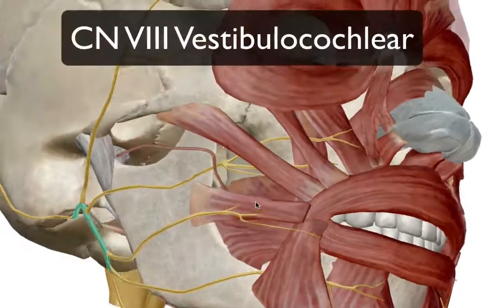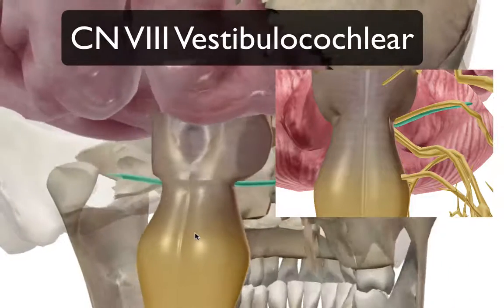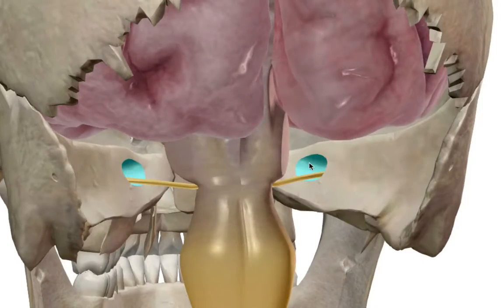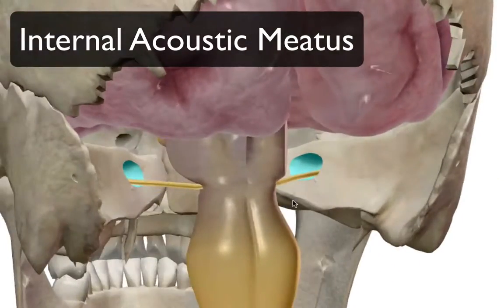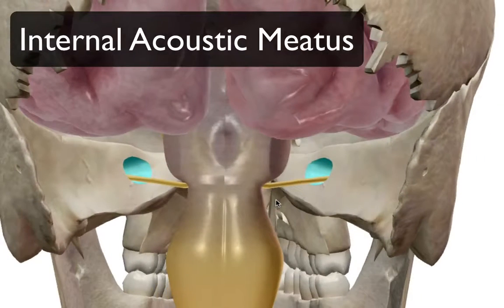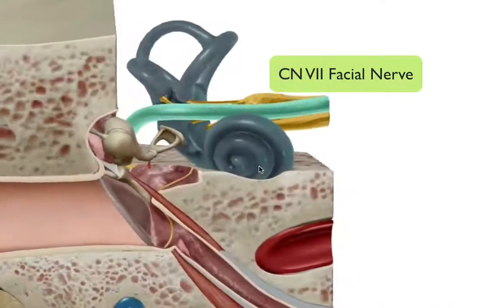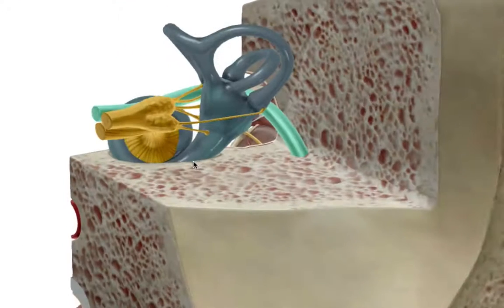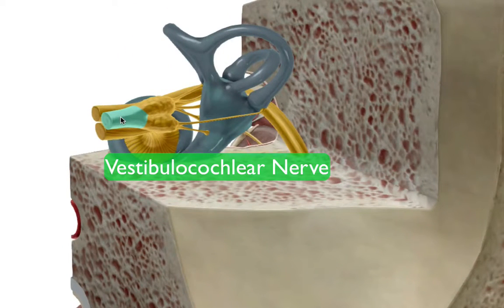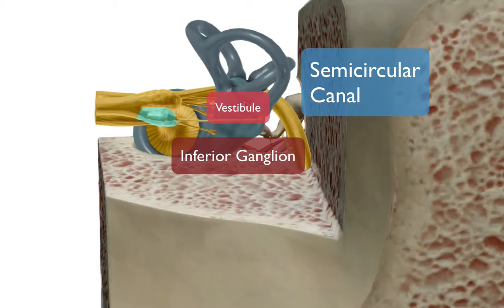Cranial nerve number eight, the vestibulocochlear. Its origin is in the same area as the facial nerve and it also passes through the internal acoustic meatus, but doesn't travel as far as the facial nerve. This nerve goes into a very special sense organ dealing with hearing and equilibrium. The vestibular aspect branches into a superior and inferior ganglion and innervates the semicircular canals of the vestibule, the area of the ear that deals with balance.